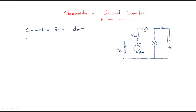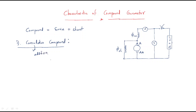Generally, the compound generator is of two types: one is cumulative compound and the other is differential compound. What is the cumulative compound? The name itself — cumulative means addition, simply plus. That means we have two fluxes, the shunt flux as well as the series flux, and both will be added to get the total flux. This is called the cumulative compound generator.